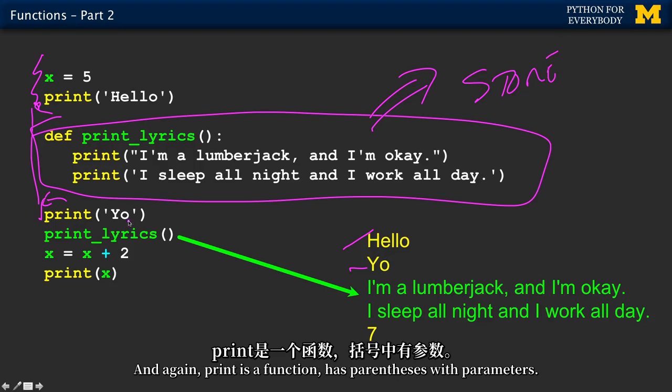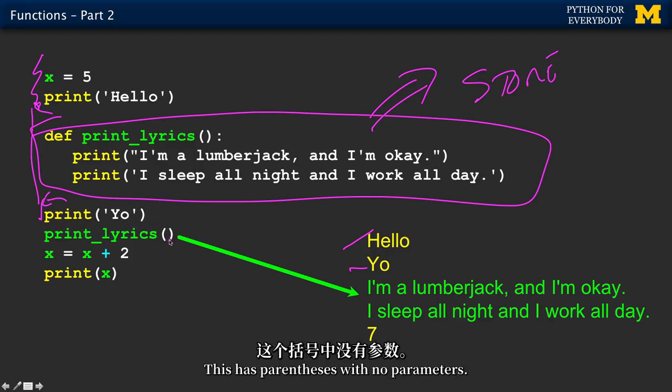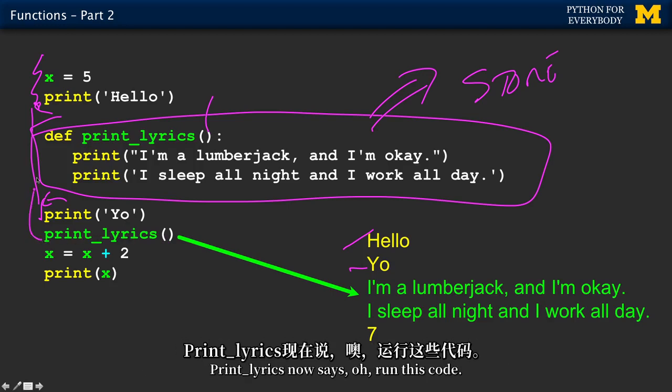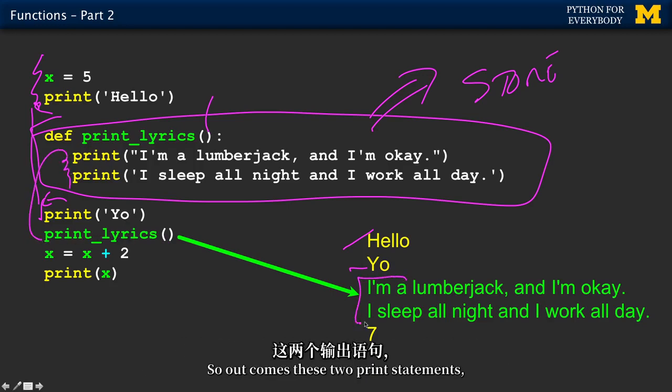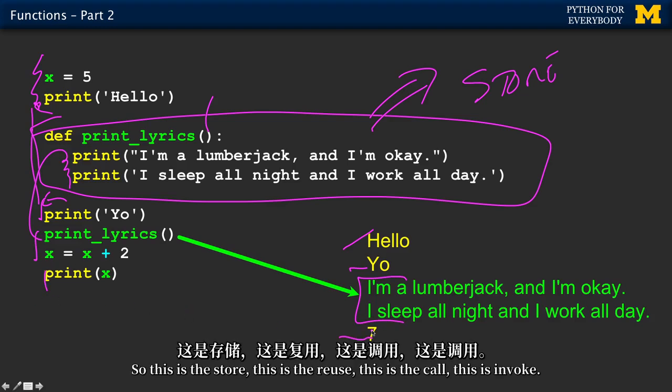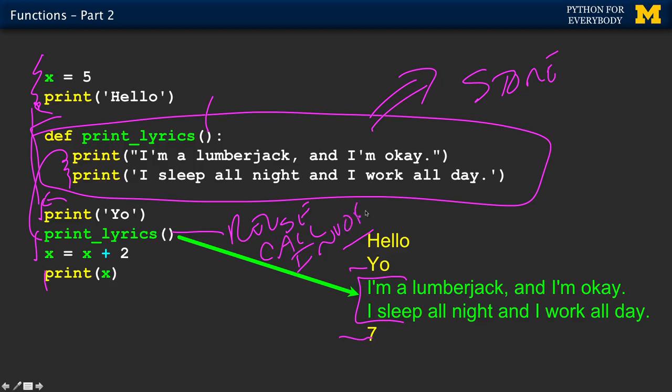Now we print out yo, and so out comes yo. And then we call print_lyrics. Again, print is a function. Has parentheses with parameters. This has parentheses with no parameters. We didn't put any parameters in. We'll get to that in a second. Print_lyrics now says, oh, run this code. So out comes these two print statements. Then we add two to x, print it, and then out comes seven. So this is the store. This is the reuse. This is the call. This is invoke.